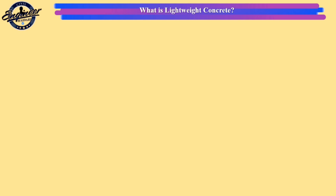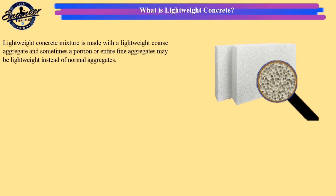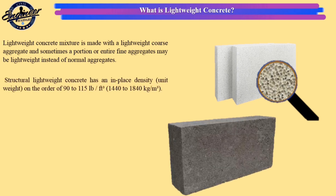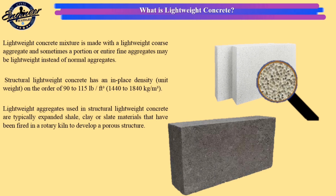Lightweight concrete mixture is made with a lightweight coarse aggregate, and sometimes a portion or entire fine aggregates may be lightweight instead of normal aggregates. Structural lightweight concrete has an in-place density on the order of 90 to 115 pounds per cubic feet, or 1,440 to 1,840 kilograms per cubic meter. Lightweight aggregates used in structural lightweight concrete are typically expanded shale, clay, or slate materials that have been fired in a rotary kiln to develop a porous structure.